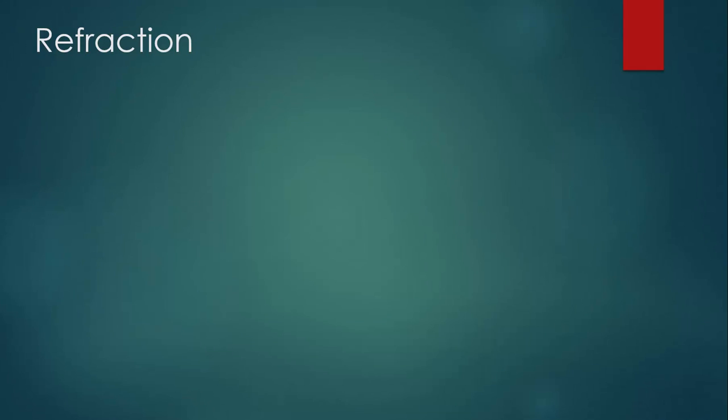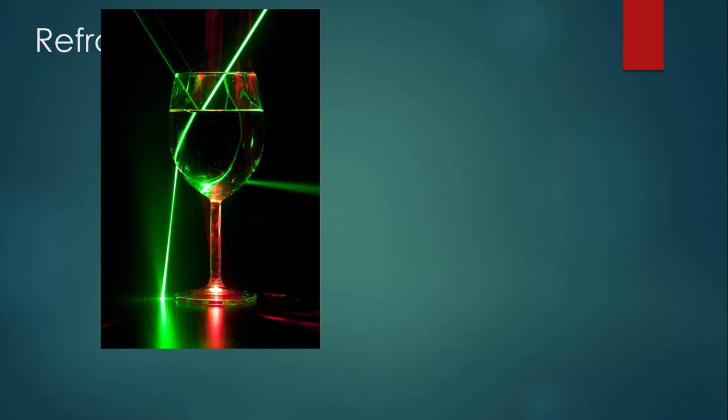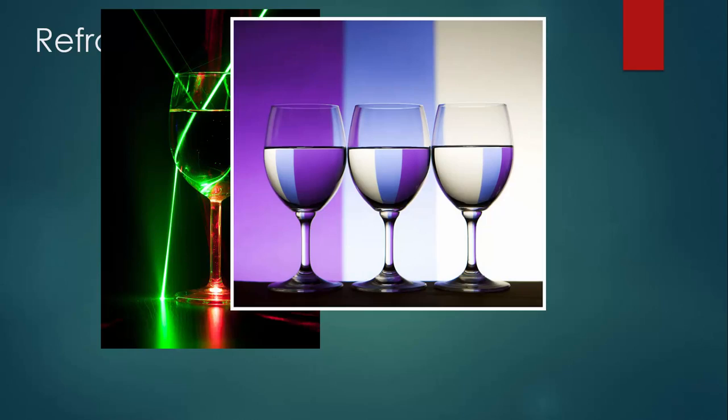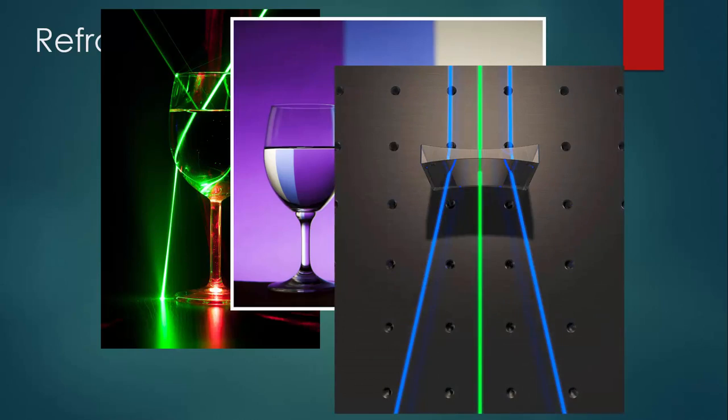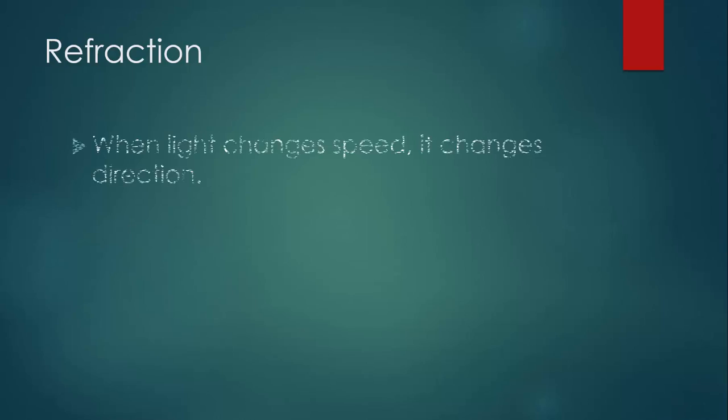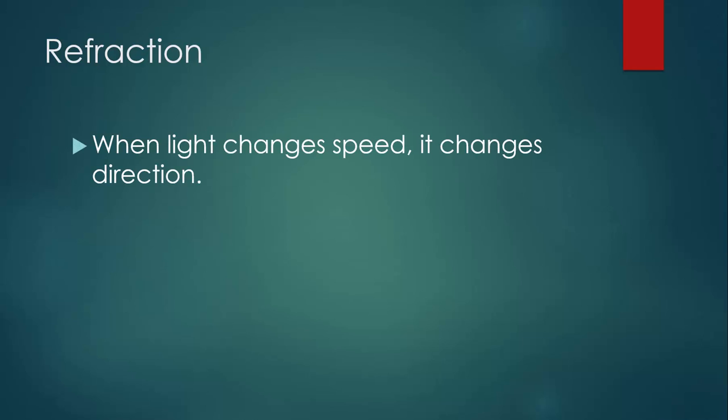Now we finally get to refraction itself. These are all examples of refraction. When light traveled from air into glass, or glass into water, the speed changed because the materials have different indices of refraction, and therefore the direction changed.